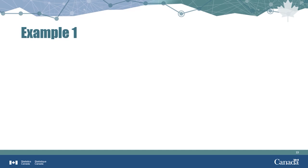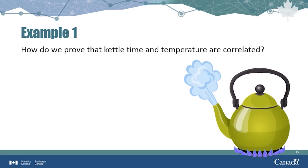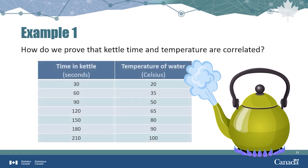Let's go back to our example of water boiling in a kettle. This data table provides the temperature of water in a kettle at seven equally spaced moments in time. After the first 30 seconds, the water is at a temperature of 20 degrees Celsius. At the final moment, the water has reached its boiling point of 100 degrees Celsius. Using the value of r, we can prove there is a positive correlation between time and temperature through both the correlation coefficient and data visualization.